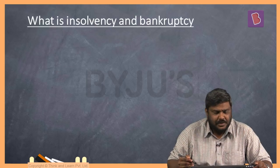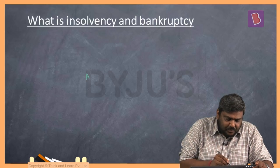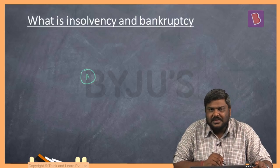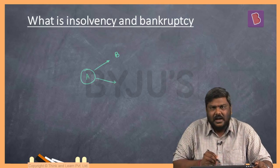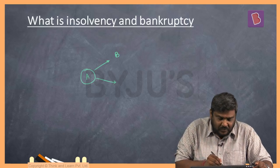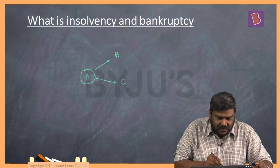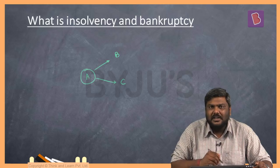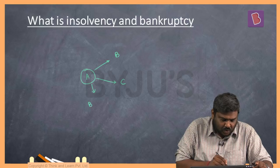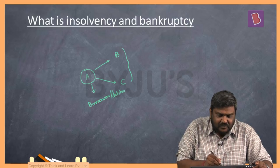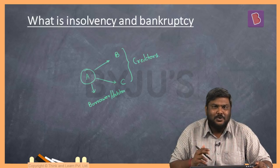Let me start with the basic concept of insolvency and bankruptcy with an example. In a market, assume A is a manufacturer who has taken a loan from a bank B and has also purchased certain raw materials from a vendor C. Bank B has given credit to A and vendor C has also provided raw materials to A on credit. Technically speaking, A is referred to as a borrower or debtor, and B and C are referred to as creditors. As per the Insolvency and Bankruptcy Code, in the market there are two types of creditors.